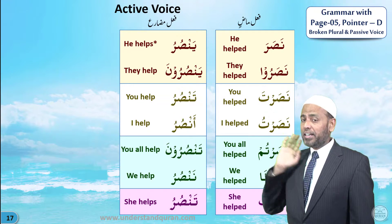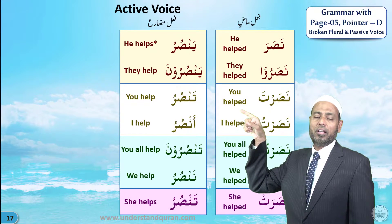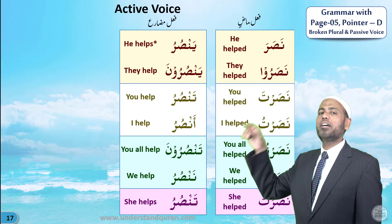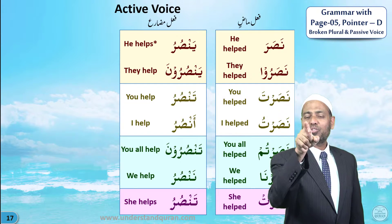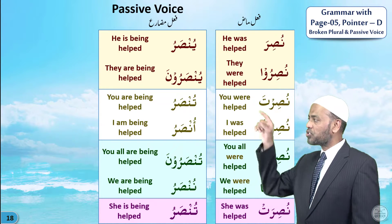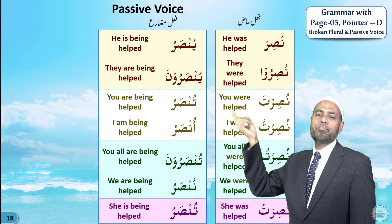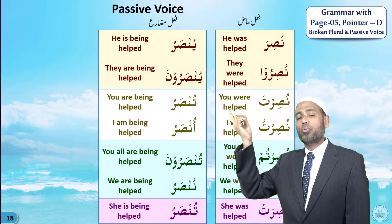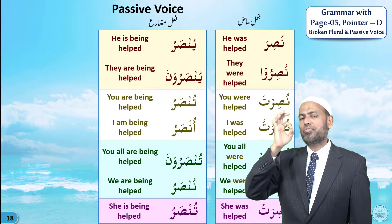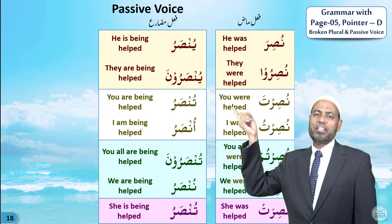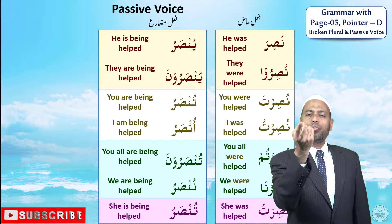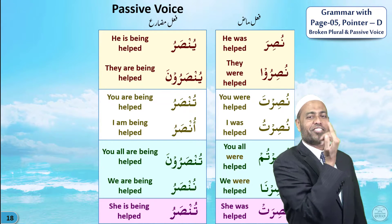Let's take the mudari' form. In active voice: nasara — yansuru, he helps. Now for passive mudari': yansuru becomes yunsaru — he is being helped. The change is: start with U — yunsaru. So: yunsaru — he is being helped. Yunsaruna — they are being helped. Tunsaru — you are being helped. Unsaru — I am being helped. Tunsaruna — you all are being helped. Nunsaru — we are being helped.